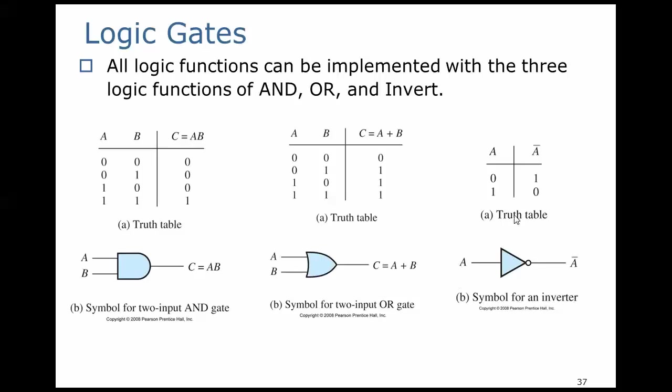Lastly, we have the NOT function, or the inverter function, which is just one input A, and it outputs the inverted logic. You put in a 0, you get a 1. Put in a 1, you get a 0. We use the bar over any Boolean expression, and that inverts it.